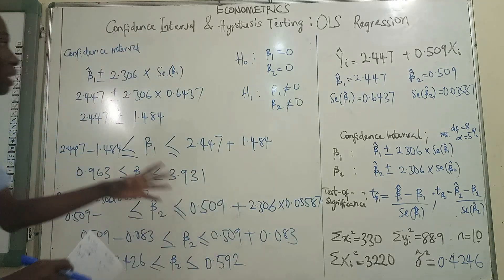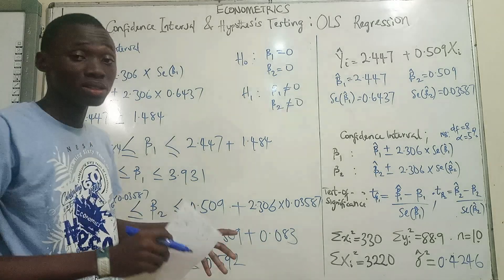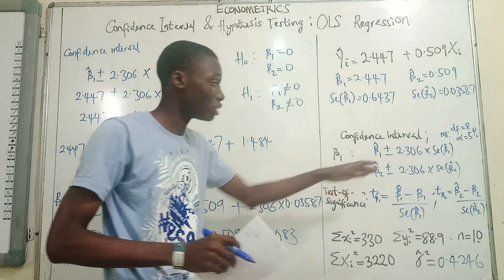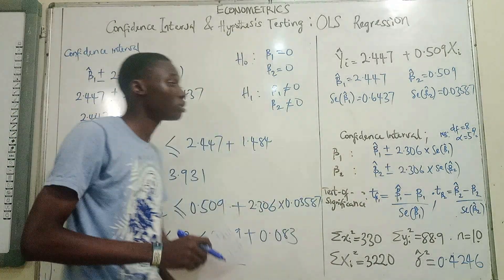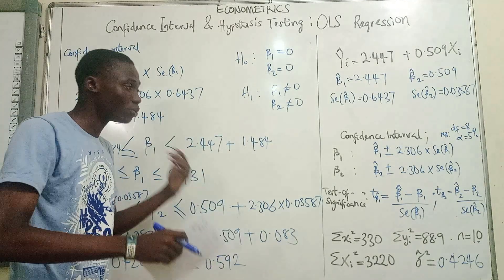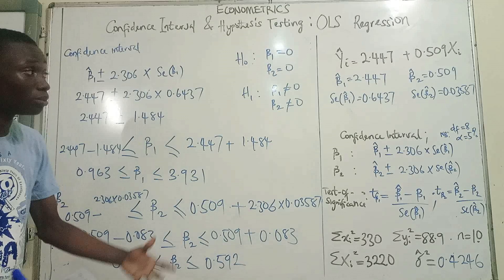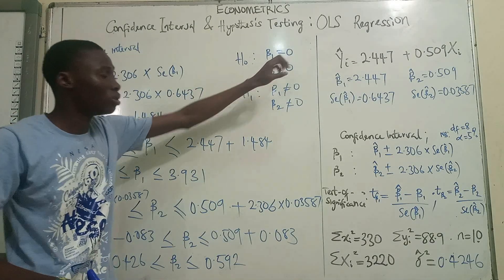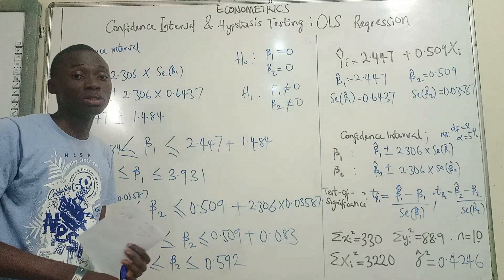We'll test that and we'll compare with our T statistics. What we got from the table actually, 2.306. We'll compute our T statistics and compare with that to decide whether to reject the null hypothesis that is 0, or not to reject the null hypothesis.